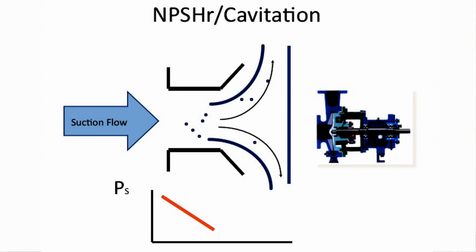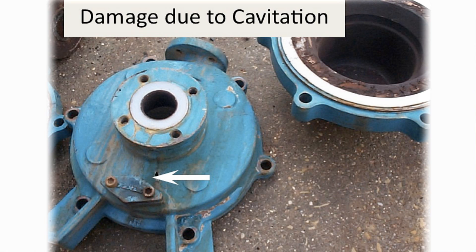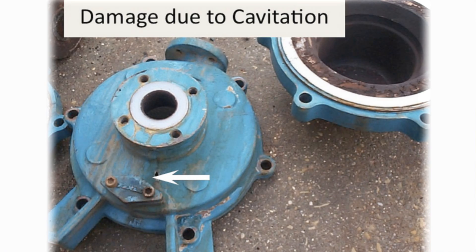The sketch shows the flow of liquid as it enters the pump. The pressure drops until it meets the eye of the impeller. If it hits the vapor pressure, vapor bubbles form, and then as they leave the pump, they collapse. The picture shows damage to a lined pump handling acid — cavitation caused a failure in the lining and the acid ate right through the pump casing.